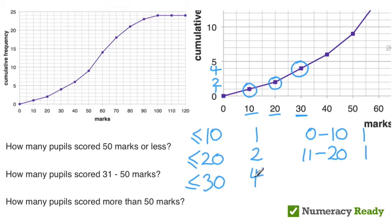So if we know 4 in total scored 30 or less but two of those scored 20 or less then we can tell from that that there were two pupils who scored 21 to 30. You can see here if we add these up we get the 4 that scored 30 or less. Hopefully that starts to help us understand how you read a cumulative frequency graph.